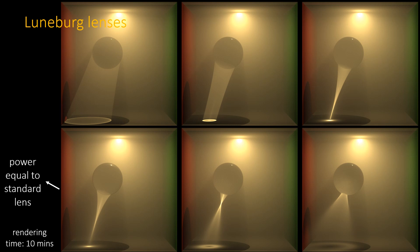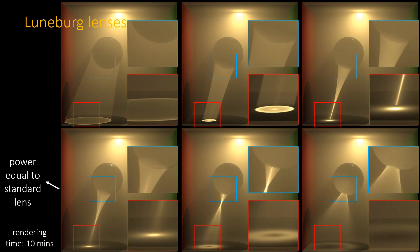This rendering is with a power similar to an ordinary glass sphere and can also be rendered with standard BDPT. Here are some insights. As the power of the lens increases, the caustics become more and more focused and then they start defocusing again.